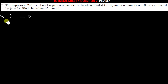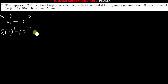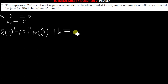When you equate x minus 2 to 0, we get the value of x to be equal to 2. So when you find f of 2 in this function, you have to equate it to 14 since the remainder is 14. So we write 2 times 2 to the power 3, minus 2 to the power 2, plus a times 2, plus b, and this should give us the remainder of 14.